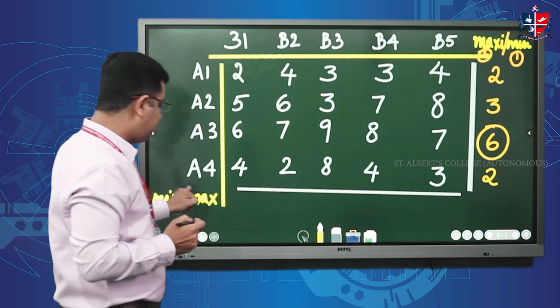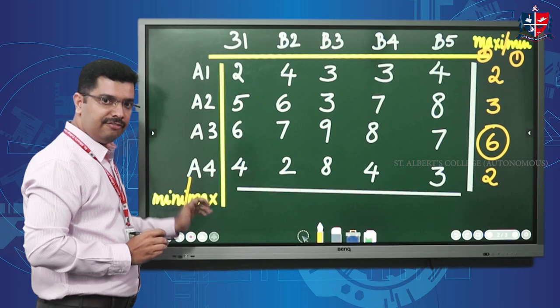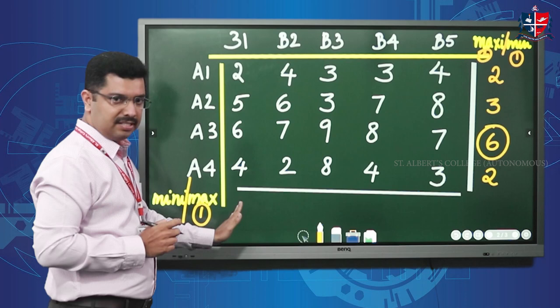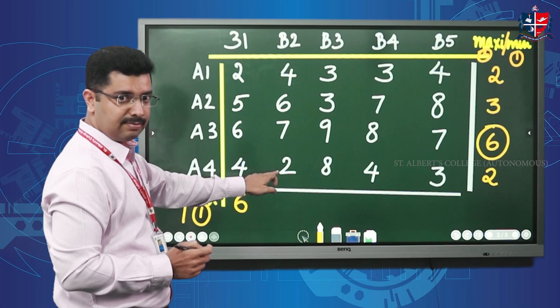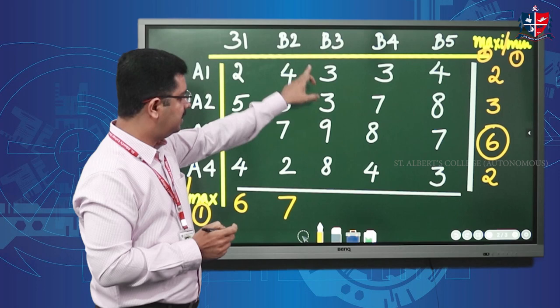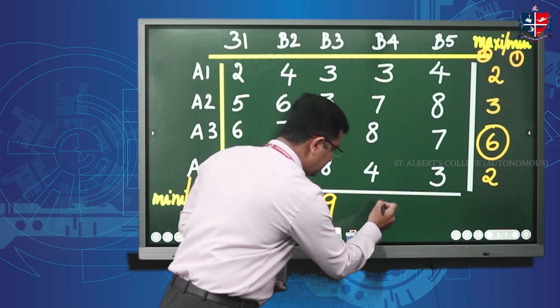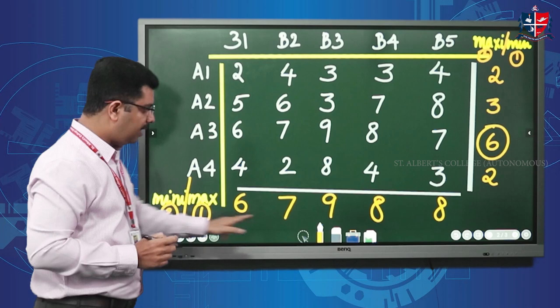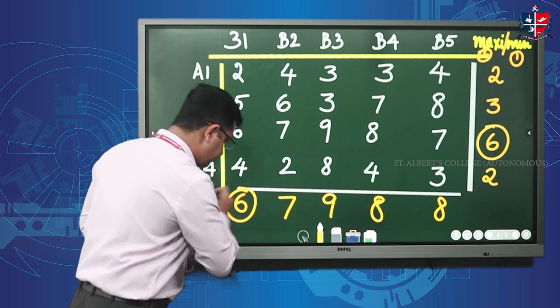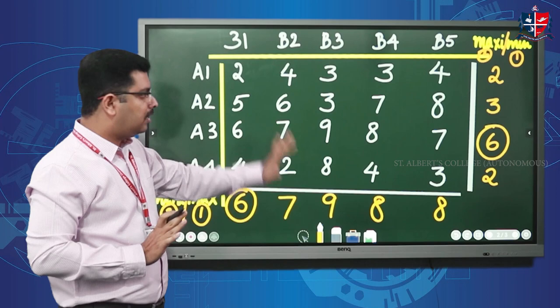For minimax, follow the same technique — do the second half ('max') first. Take each column and find the maximum value. For the first column, the maximum is six; second column, seven; third column, nine; fourth column, eight; last column, eight. Now do the second operation — 'min'. Among these values, the minimum is six.